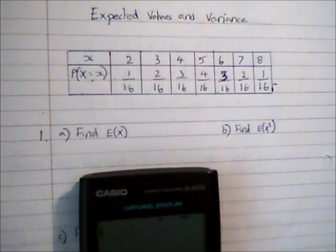In this video we are going to look at calculating expected values and variance for a discrete random variable. So here I have a table of a probability distribution for a random variable.